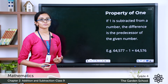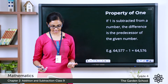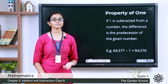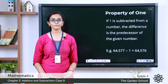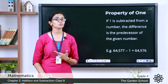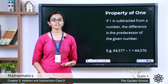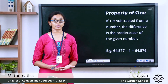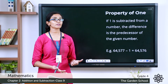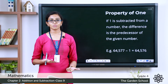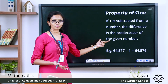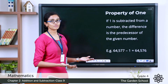Now the property of one. It says that if 1 is subtracted from any number, the difference is the predecessor of the given number. We learned about predecessor in our first chapter — predecessor is the number that comes right before a given number. How do we find the previous number? We just subtract 1 from the given number.